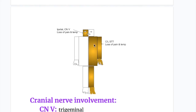Cranial nerve 5, the trigeminal nerve, causes loss of pain and temperature on the ipsilateral side of the face, as it provides sensory supply to the face. So there is ipsilateral loss of pain and temperature on the face due to cranial nerve 5 involvement, and contralateral loss of pain and temperature on the body due to spinothalamic tract involvement.